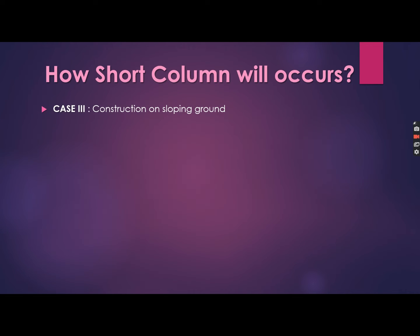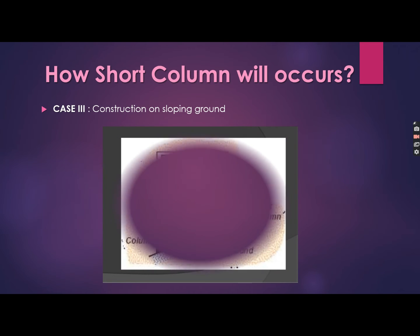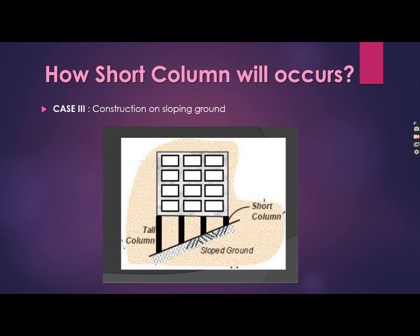Case three: construction on sloping ground. When it is not possible to provide a level ground for the construction of a building, the footings can be placed at different levels according to the terrain. The columns formed at higher elevations are of shorter height, and due to this shorter height, the short column effect is introduced in the building.